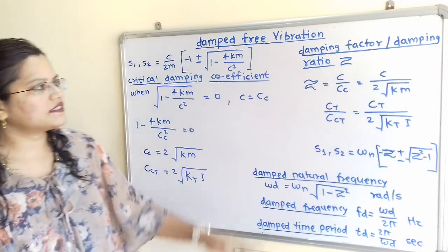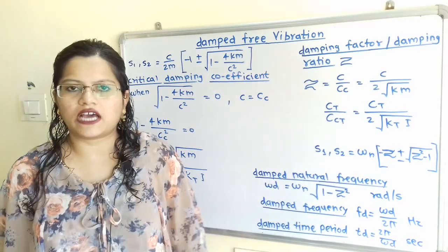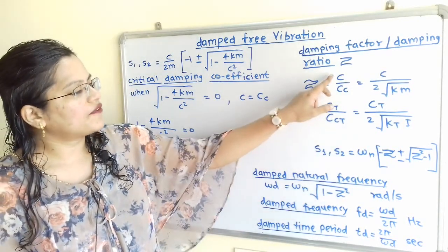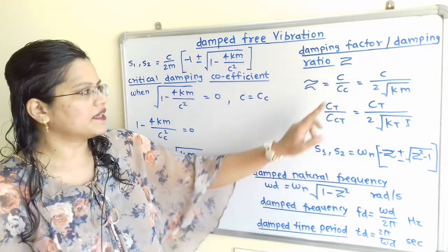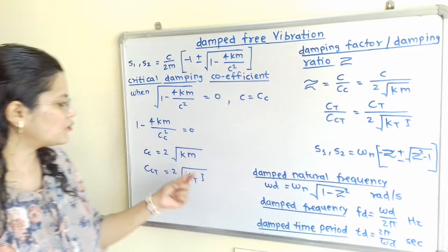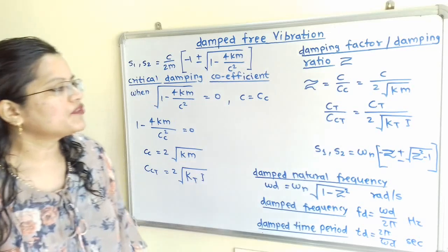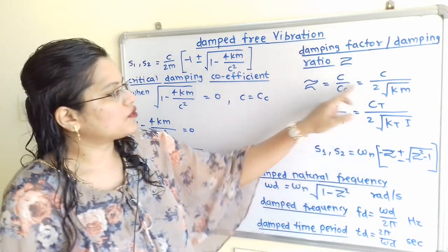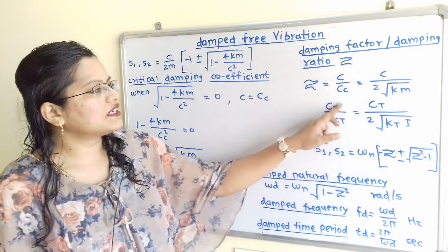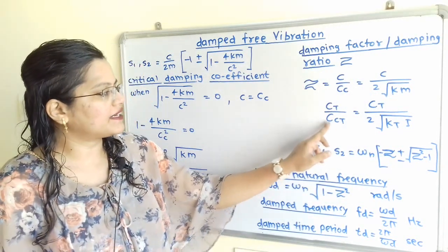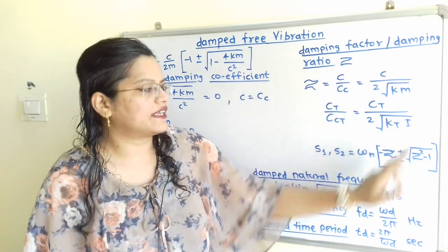Next is the damping factor or damping ratio, with notation zeta (ζ). Zeta is the ratio of the damping coefficient to the critical damping coefficient: ζ = C/Cc. Substituting Cc = 2√(KM), we get the formula for zeta. For the torsional system, ζ = Ct / CcT = Ct / (2√(Kt·I)).